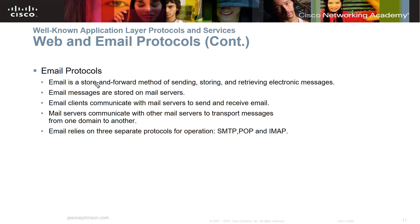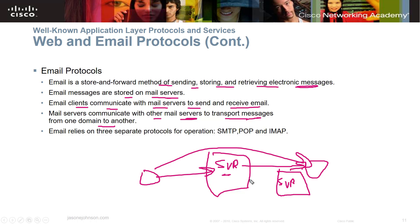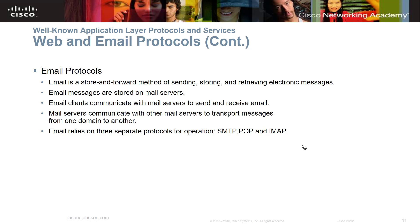Email is a store-and-forward method of sending, storing, and retrieving messages. Email messages are stored on mail servers; clients communicate with mail servers to send and receive, and mail servers communicate with each other to transport messages. Email relies on three separate protocols: SMTP, POP, and IMAP. You really need to know the differences between those three and memorize their port numbers — you will get questions on them on your exam.